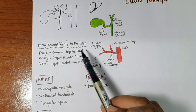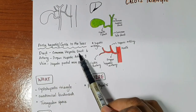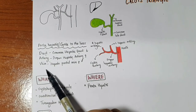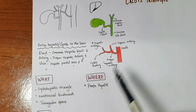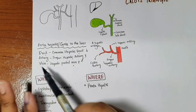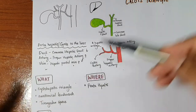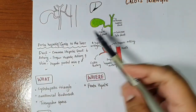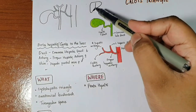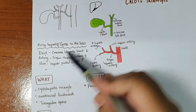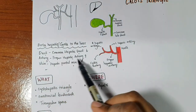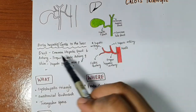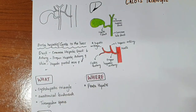The duct is the common hepatic duct, the artery is the proper hepatic artery, and the vein is the hepatic portal vein. It's enough to know that the common hepatic duct leaves the liver via the porta hepatis, while the proper hepatic artery and the hepatic portal vein enter the liver through the porta hepatis.